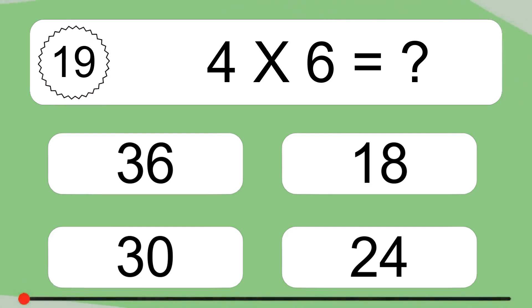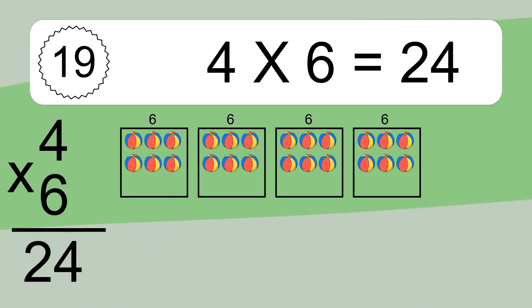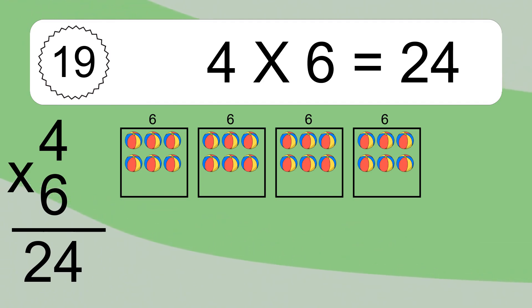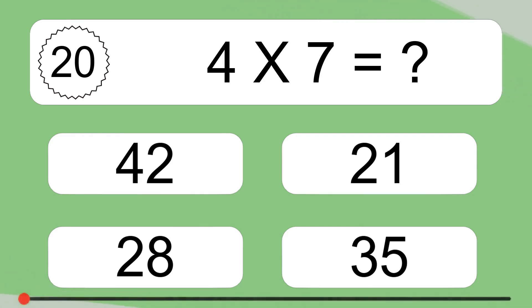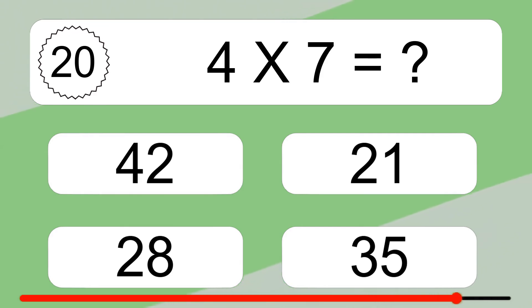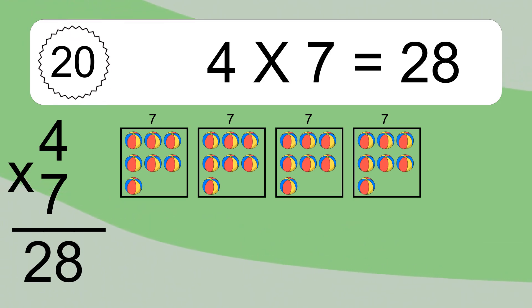4 times 6 equals what? 4 times 6 equals 24. We have 4 boxes, and each box has 6 colorful balls inside. If you count all the balls in all the boxes together, you will have 4 times 6 balls. This equals 24 balls. You will have 4 times 7 balls. This equals 28 balls.